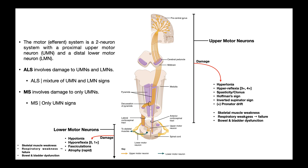The thoracic diaphragm that controls breathing is a muscle and it has nerves that go to it to control its contraction. So if you have damage to these neurons, you'll eventually have respiratory weakness, and if that damage progresses, it'll eventually become respiratory failure. Also, if we consider the sacral level nerves, we could potentially have bowel and bladder dysfunction in ALS.